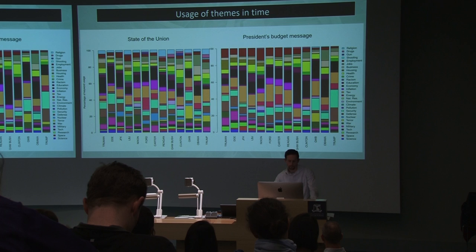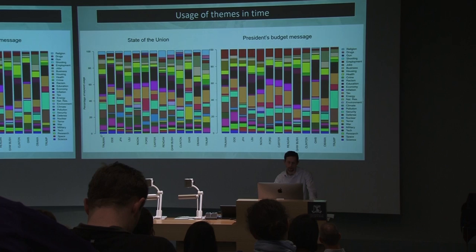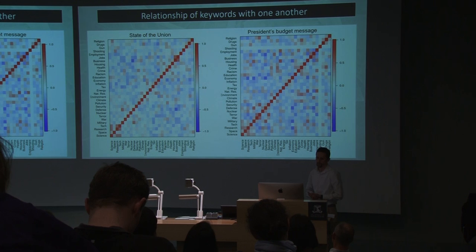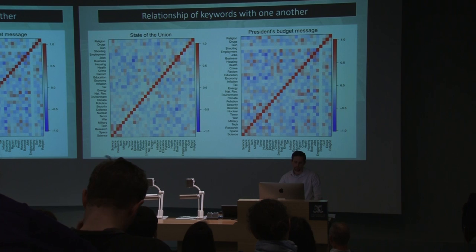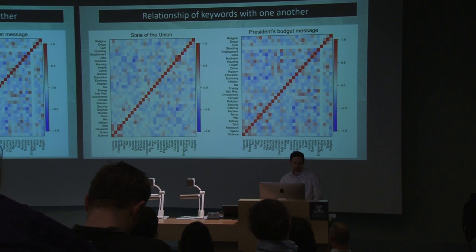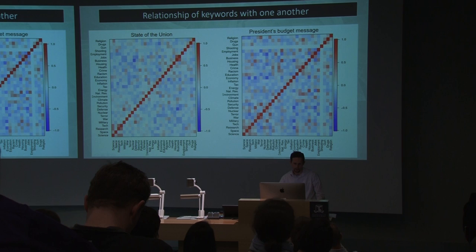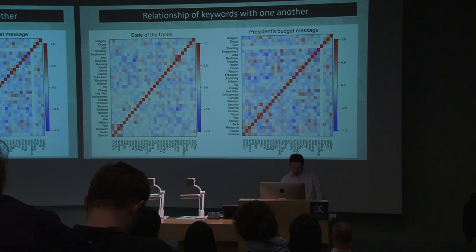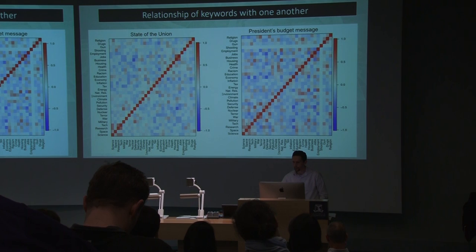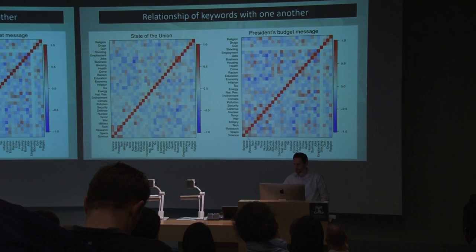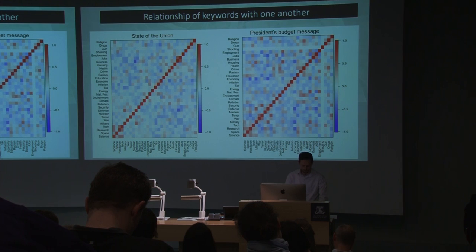One thing we've done is look at not just how keyword counts evolved over time, but how they relate — how they're used together in the same speech. Looking at these correlations, we can see that science, research, and technology correlate very strongly with one another, as do jobs and business. Interestingly, defence and business are strongly negatively correlated. When we look at the budget messages, we find a strong correlation between the science themes, but also negative correlations between military and economic themes.